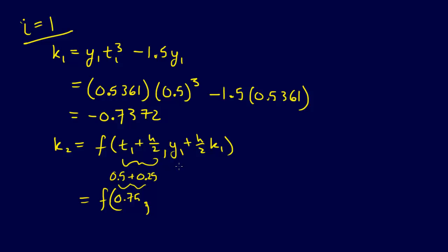So we're going to say equals F of 0.75. And the Y value is going to be Y1, so that was 0.5361 plus H over 2 is 0.25 times our K1, which was minus 0.7372. And when we crunch that out, we get 0.3518. So we're going to do F of 0.75, 0.3518.